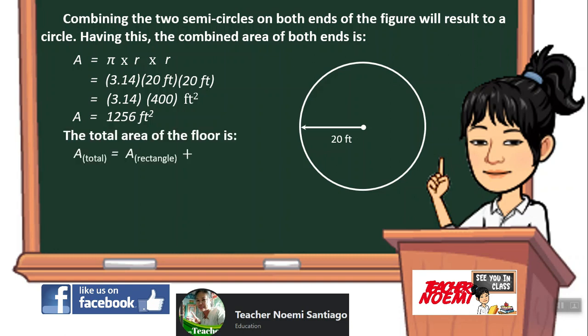The total area of the floor is area of rectangle plus area of circle. 3,400 square feet plus 1,256 square feet equals 4,656 square feet.